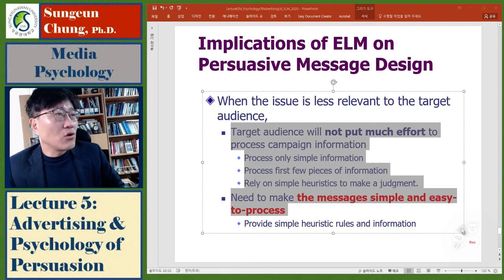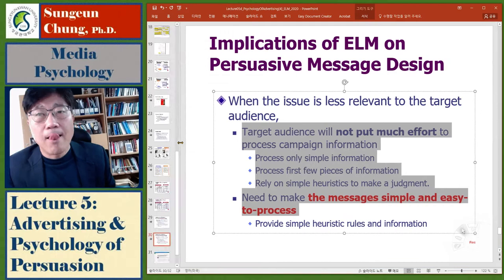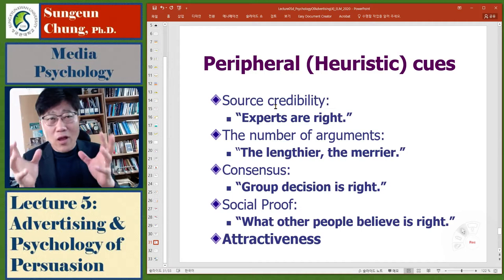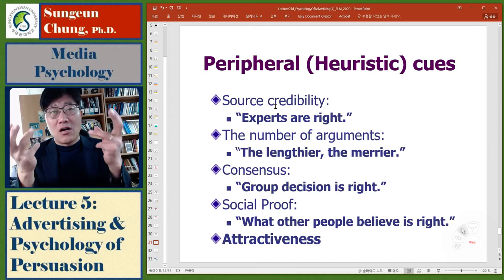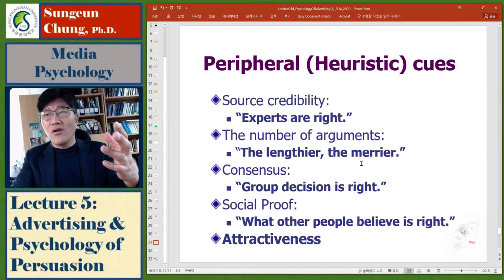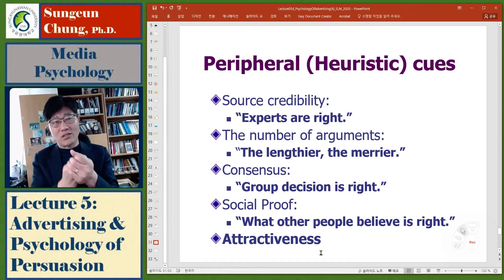Examples of peripheral cues: the lengthier the merrier, group decision is right, what other people believe is right, and attractiveness. These are peripheral cues. For this class, I'm going to give you one little assignment: you need to find one example of central processing and one example of peripheral processing.